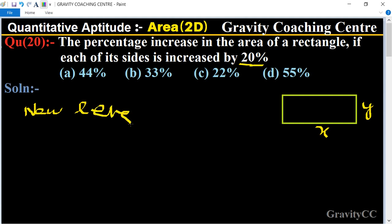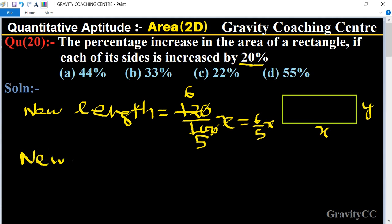New length equals 20% increase, so 120 upon 100 times x. After canceling zeros and simplifying (table of 2, 6 and 5), we get 6 by 5 x. And new breadth equals 6 upon 5 y.